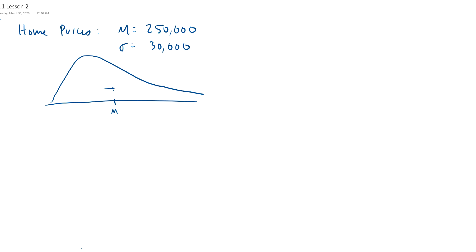Now let's look at the sample distribution of x-bar for n equals 30. So the question is, what is that saying? That's saying, I'm going to put mu here, the same mu, $250,000.